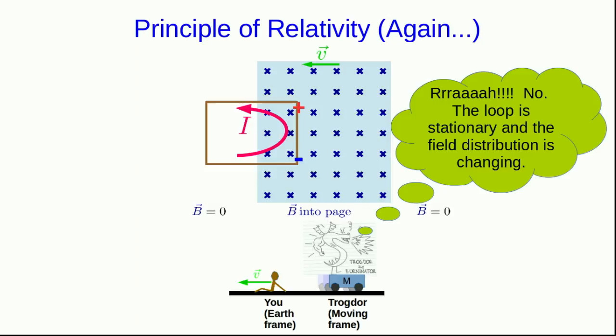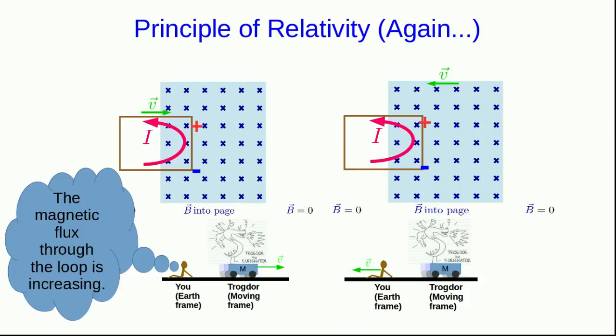However, you both definitely agree that a current flows in the loop. For example, you could measure that the loop of wire warms up because of the current running in it. And so what you can agree on is that the magnetic flux through the loop is increasing. Whether you're in your frame or Trogdor's frame, you see that that magnetic flux is increasing.